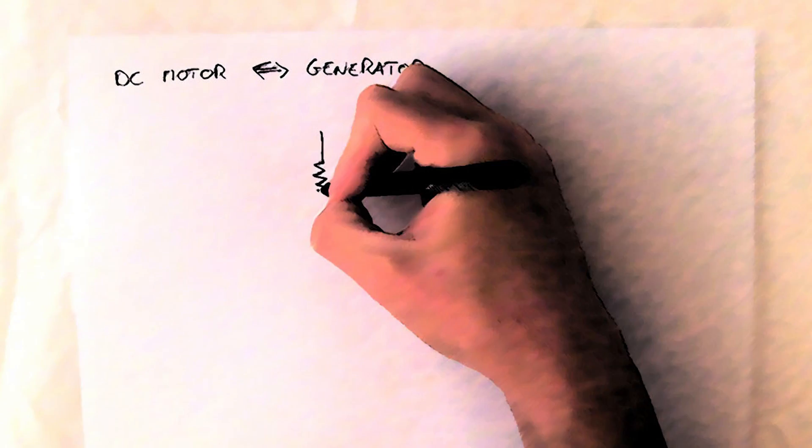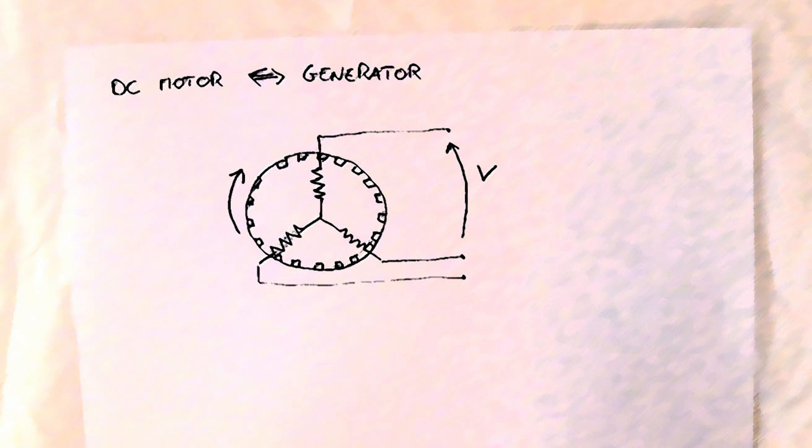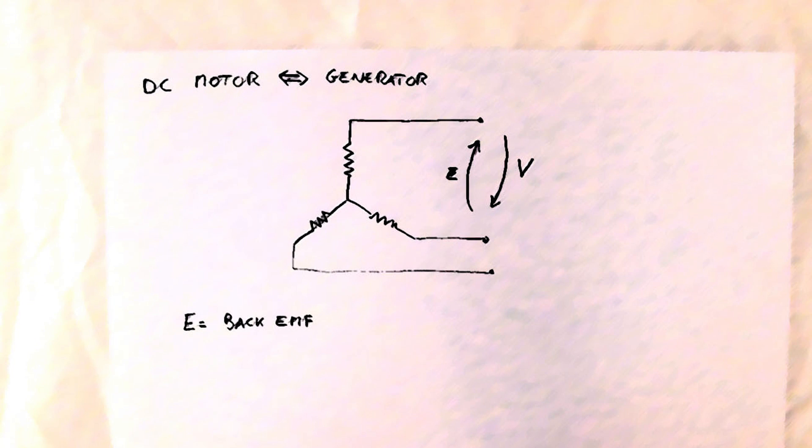When the motor is rotating, either with your hand or if it's powered up, it produces a voltage. This voltage is called E, the back electromagnetic force.